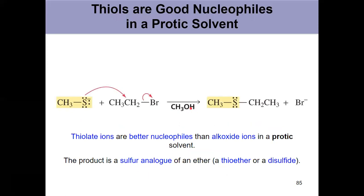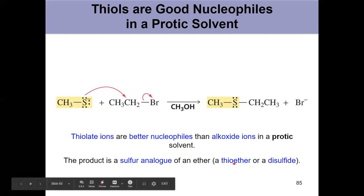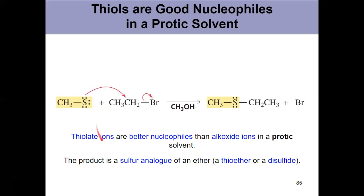If I have a protic solvent, now my thiol can act as a nucleophile. Then I can form this guy, which is an ether, but sulfur instead of oxygen. It's called a thioether, also known as a disulfide. Thiolate ions. Get used to seeing them. You can use them in protic solvents to react with alkyl halides. And they react even better than an alkoxide would here.